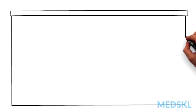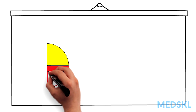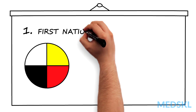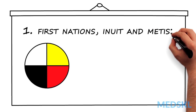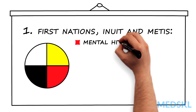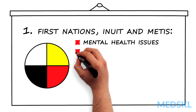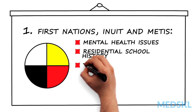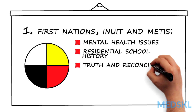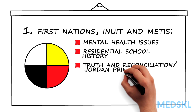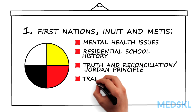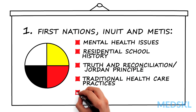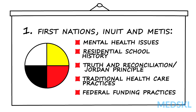For example, in First Nations, Inuit, and Métis, you might screen for mental health issues, residential school history, truth and reconciliation, Jordan's principle, traditional health care practices, and federal funding practices.